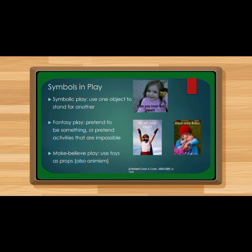Symbolic function is the ability to represent objects and events. A symbol is a thing that represents something else — a drawing, a written word, or a spoken word comes to be understood as representing a real object, like a real MRT train. The symbolic function gradually develops in the period between two to seven years. A two-year-old may pretend she is drinking from a glass that is really empty. At around four years of age, a child may turn that empty glass into a rocket ship or a telephone — using the object as a symbol.